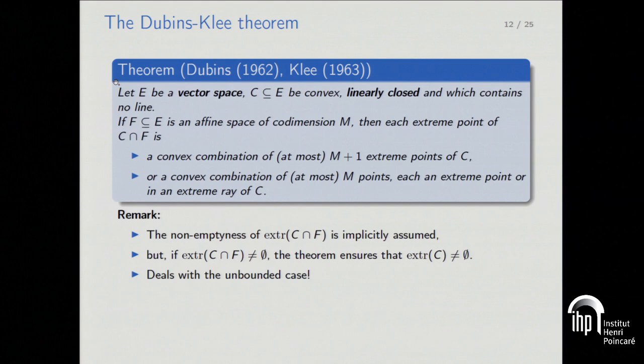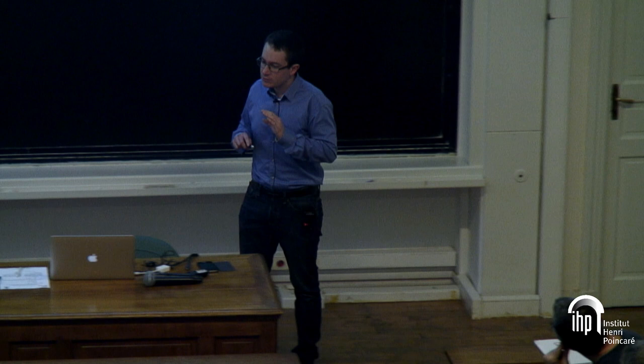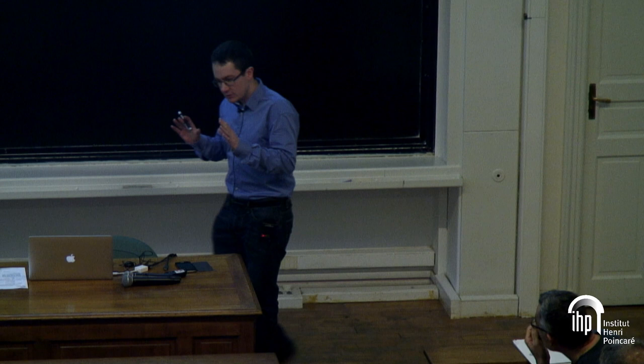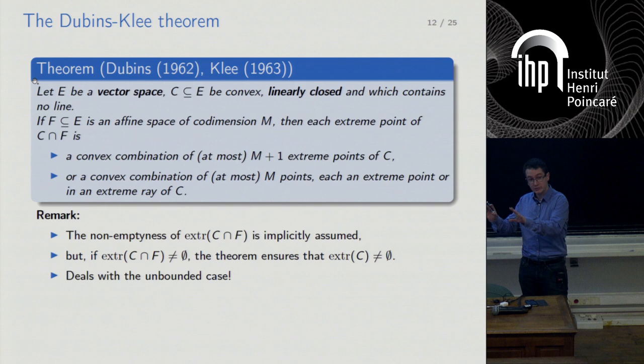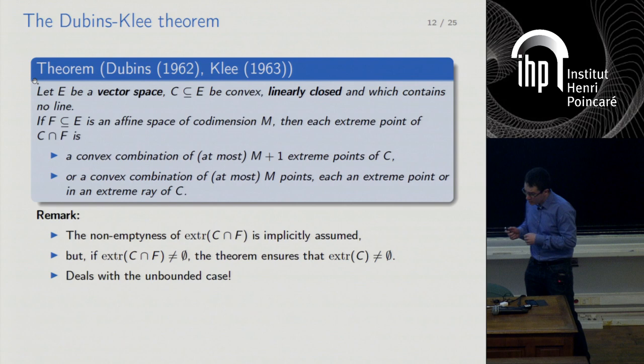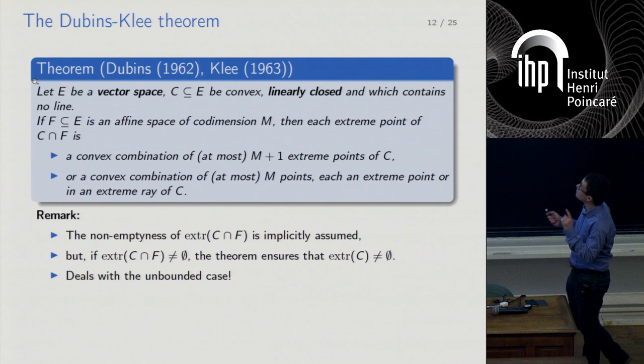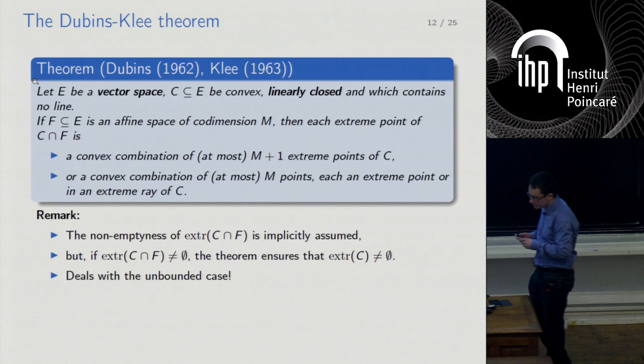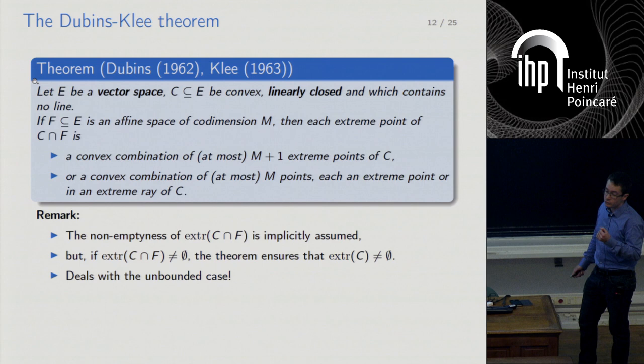A tiny detail: they implicitly assume the set of extreme points is non-empty without proving it, which is why they make no compactness assumptions. The existence part must be proved by other means. But the theorem proves that if you have an extreme point in the intersection, there will be some extreme point in the convex set C. The very nice thing about this theorem is that there is no topology, making it very clean.